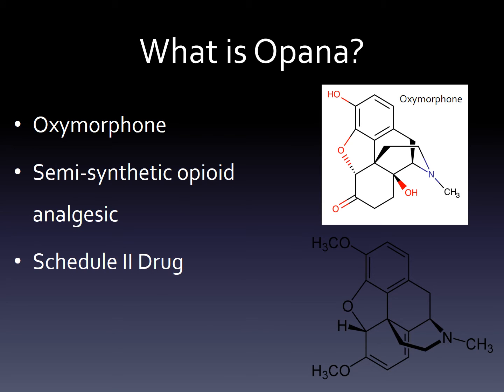Thebaine's structure is now shown on the bottom right. As you may remember, thebaine is one of the opiates that is found in the opium poppy, and it's a precursor for all of the typical opiate drugs we hear about, like Percocet, Oxycodone, and Hydrocodone. Oxymorphone is a synthetic derivative of thebaine.